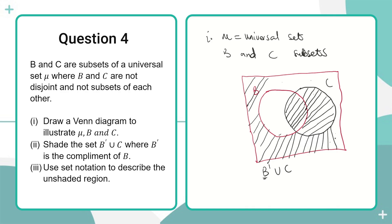Sometimes we can be given questions where you are asked to describe things or shade some regions rather than produce numbers. This is one example of such a question. We shade it and then we are done with part ii.